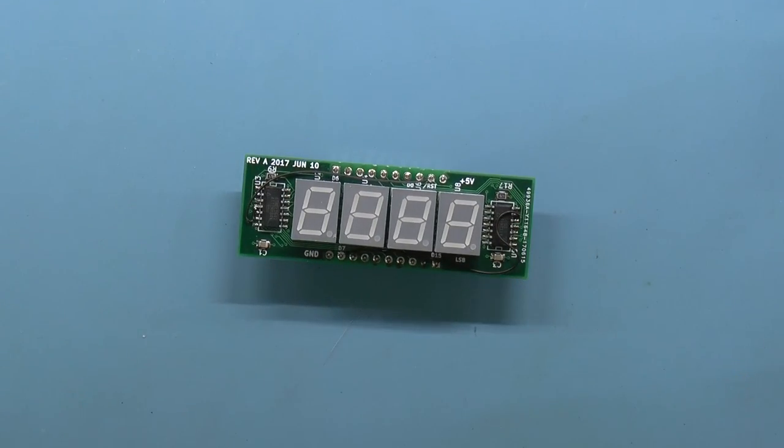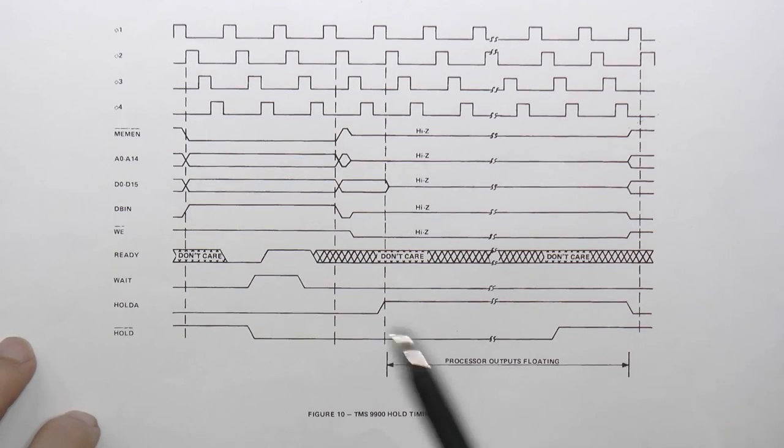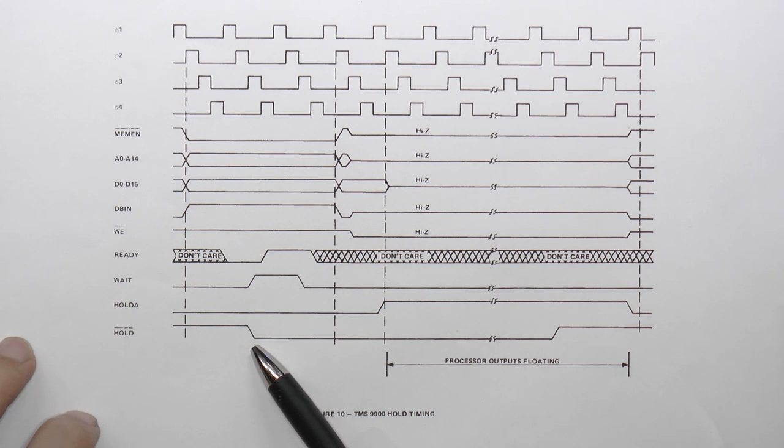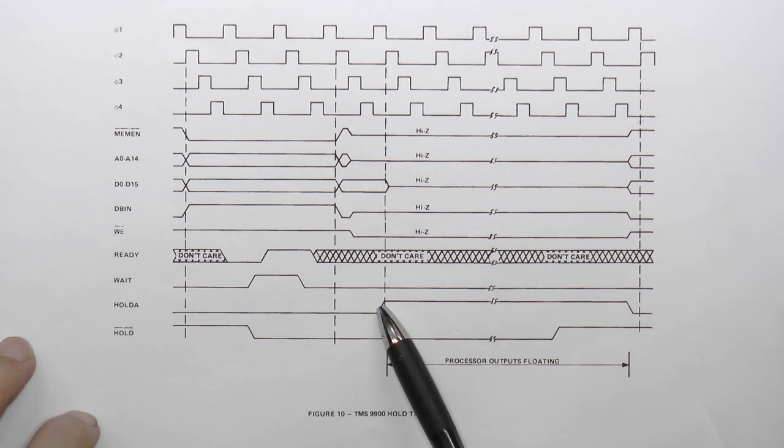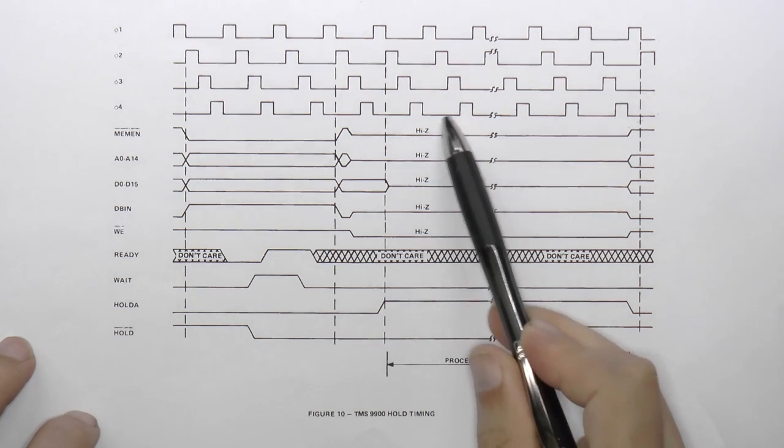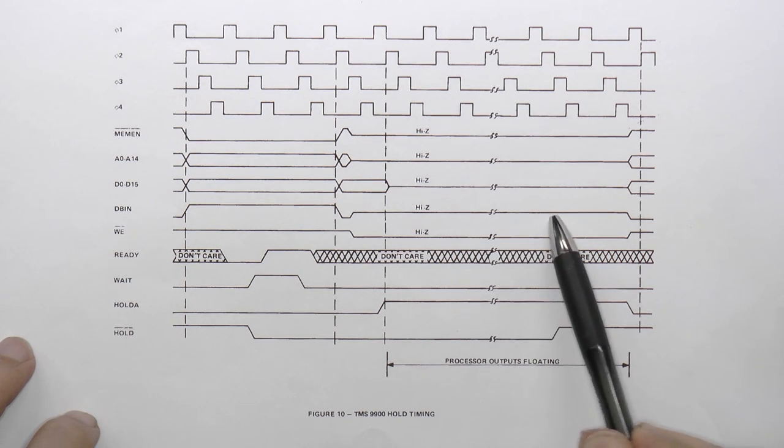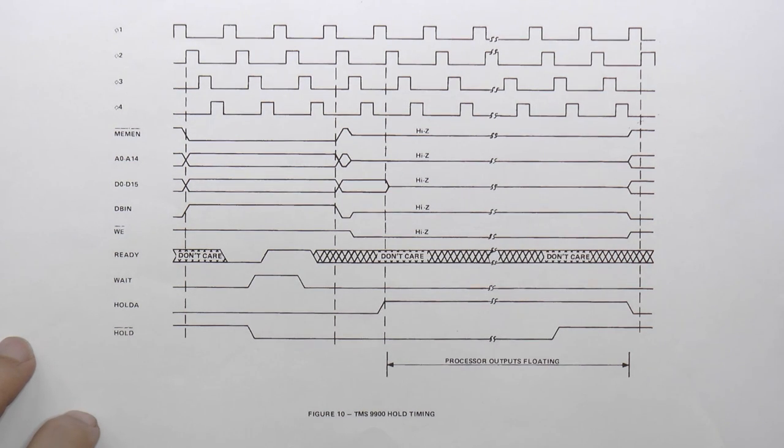Now according to the datasheet, when the hold line is activated and the CPU acknowledges hold, all of the CPU's outputs go high impedance. And since we have no pull-ups for the display's inputs, the display will show whatever it wants to display. This means that I have to capture the address lines at some point, and that means using a transparent latch.